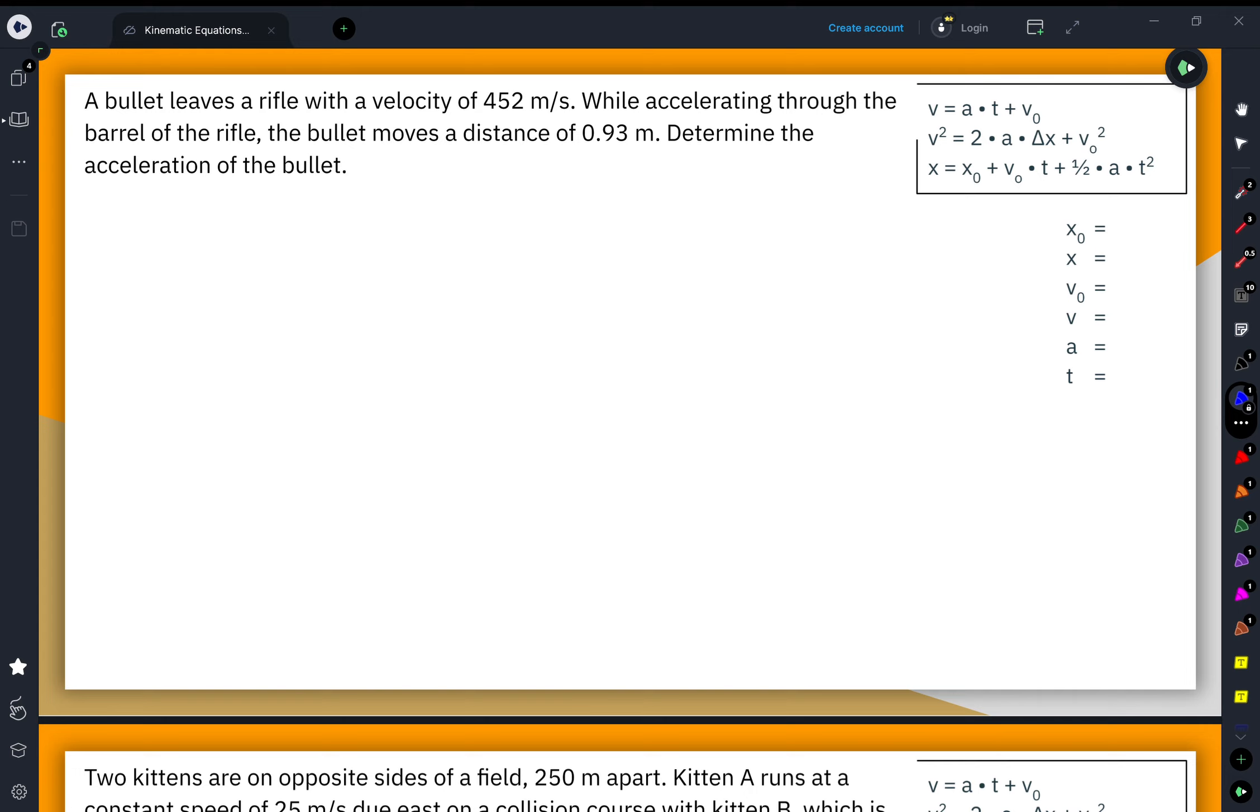The first thing I'm going to do is draw a picture to help me illustrate the situation. It doesn't have to be anything amazing. I'm just going to say that the barrel of the rifle looks like a rectangle. This is what my bullet looks like. This is where it starts before the bullet, before the gun is fired.